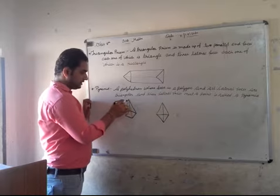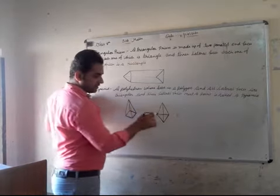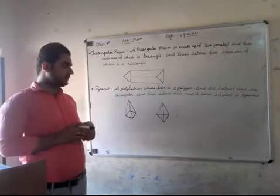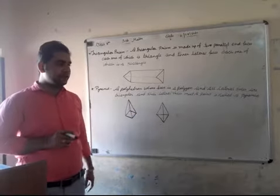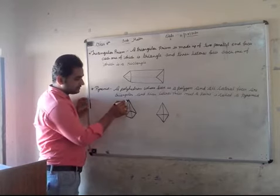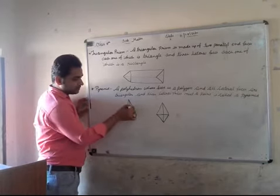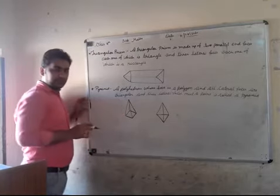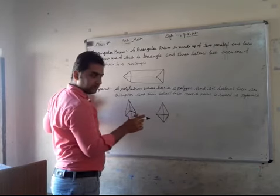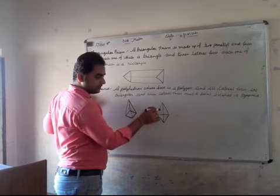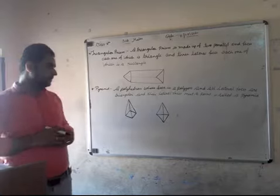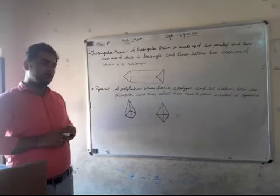Look at this — the lateral faces form a triangle set. It is a triangle face, called a triangle set. One corner of the triangle set meets at a single point, and the base is a polygon.